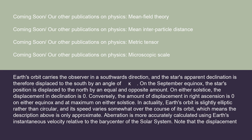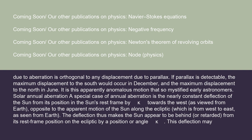In actuality, Earth's orbit is slightly elliptic rather than circular, and its speed varies somewhat over the course of its orbit, which means the description above is only approximate. Aberration is more accurately calculated using Earth's instantaneous velocity relative to the barycenter of the solar system. Note that the displacement due to aberration is orthogonal to any displacement due to parallax. If parallax is detectable, the maximum displacement to the south would occur in December, and the maximum displacement to the north in June. It is this apparently anomalous motion that so mystified early astronomers.